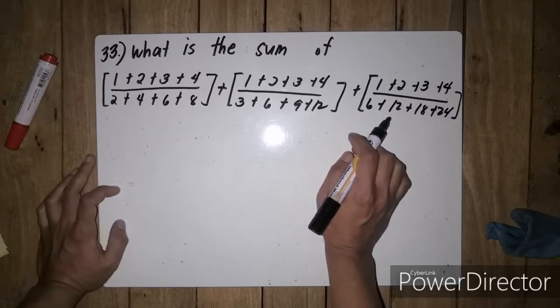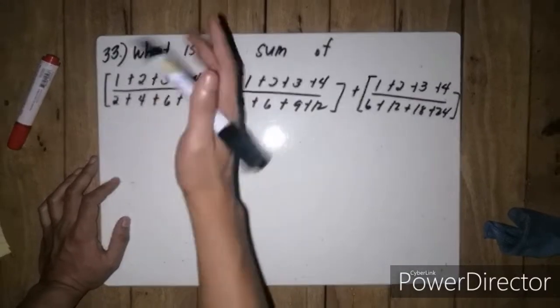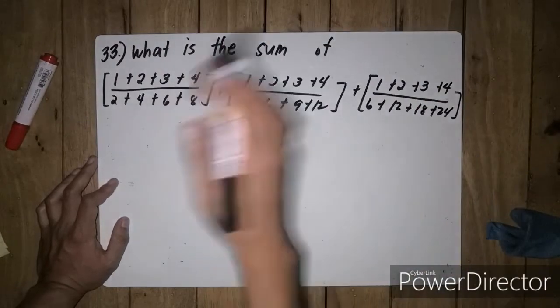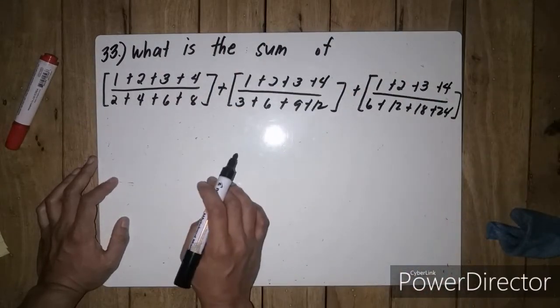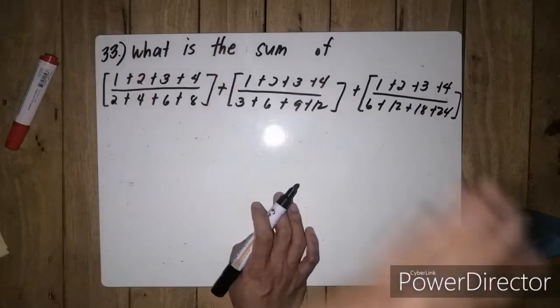Okay, so the normal way of solving this, we would add the numerators, then divide to get the simplified fraction, then add them all. But I tell you, when you have this kind of problem, you have to observe the numbers.